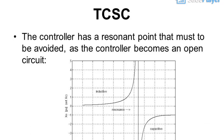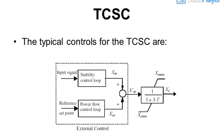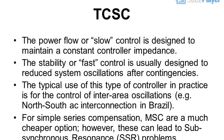TCSC: the controller has a resonant point that must be avoided, as the controller becomes an open circuit. The typical controls for the TCSC are: the power flow or slow control, designed to maintain a constant controller impedance; and the stability or fast control, usually designed to reduce system oscillations after contingencies. The typical use is for the control of inter-area oscillations, for example the north-south AC interconnection in Brazil.